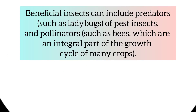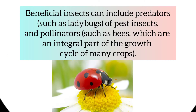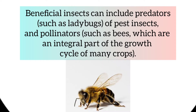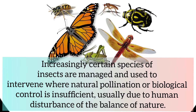Beneficial insects can include predators such as ladybugs of pest insects, and pollinators such as bees, which are an integral part of the growth cycle of many crops. Increasingly, certain species of insects are managed and used to intervene where natural pollination or biological control is insufficient, usually due to human disturbance of the balance of nature.